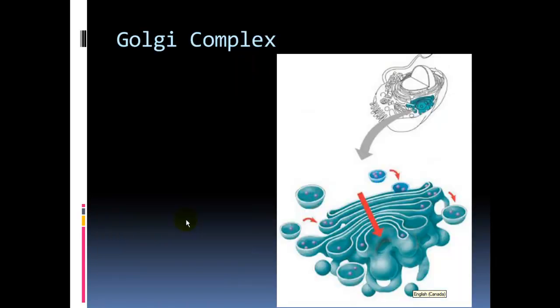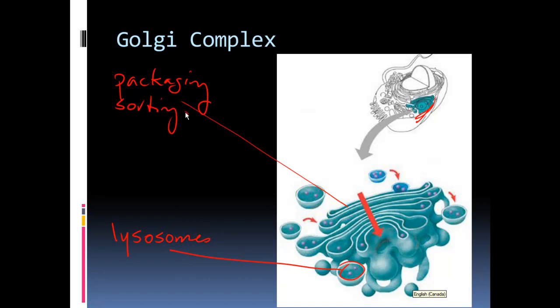Golgi complex or Golgi bodies sit closer to the outside of the cell, closer to the plasma membrane. They're involved in packaging, sorting, and modifying items. They also make lysosomes. Packaging, sorting, and modifying is their function, and they're not interconnected as we see in our ER.